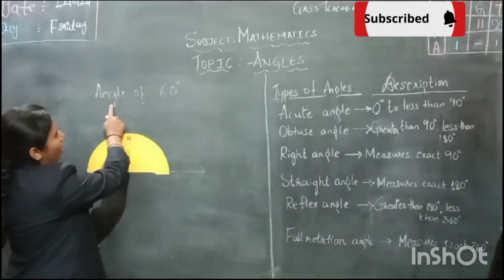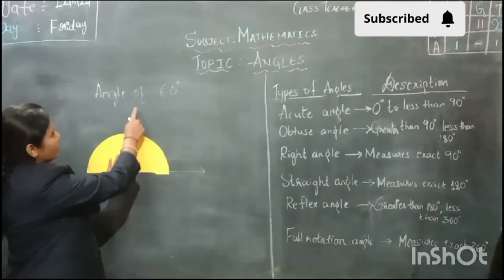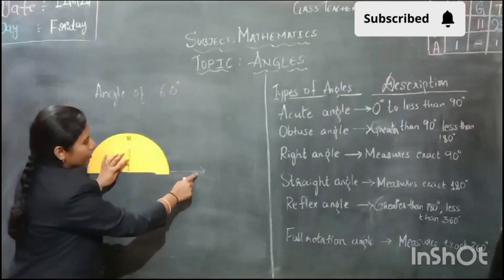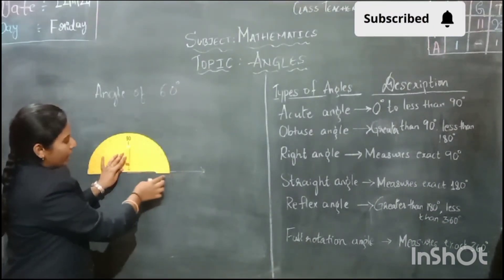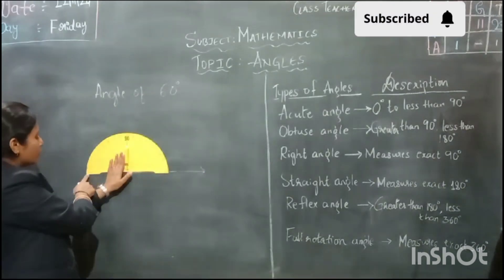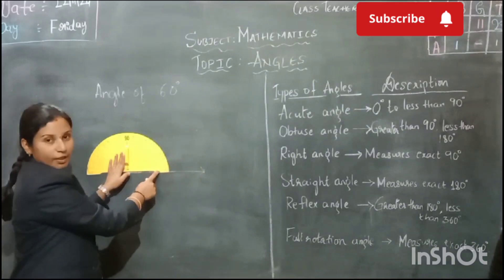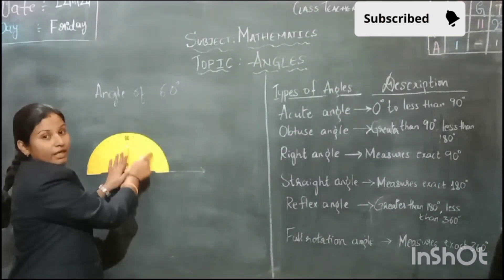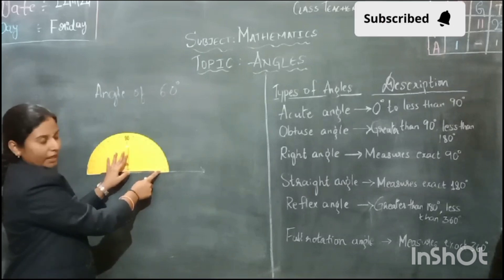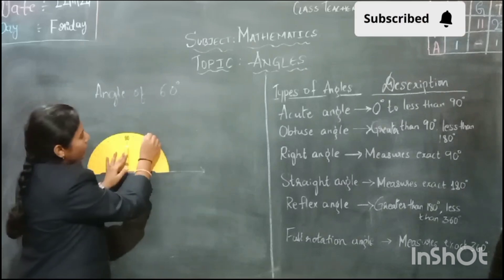Now, we have to draw an angle of 60 degrees. Many children get confused about which scale to use for measuring or drawing the angle. There is an outer scale and there is also an inner scale. Our line segment is facing towards our right side, so our 0 degree is at the right side. Our ray is facing towards this 0 degree, so we have to count from this inner scale. This is 0 degrees, 10, 20, 30, 40, 50 and 60. We have to mark a point here at 60 degrees.